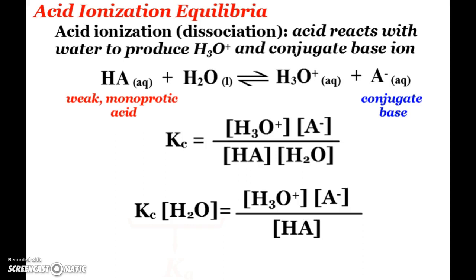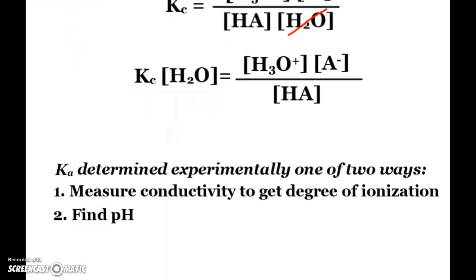Acid ionization dissociation is when an acid reacts with water. And of course we're going to make hydronium and a conjugate base, a Bronsted-Lowry situation here. If I write my KC expression, products over reactants, I get that. But typically we don't use water in the equilibrium, basically because it's constant. So if I get rid of the water and bring it up to the KC side, I see that this is going to be called what we call Ka, the weak acid ion dissociation constant.